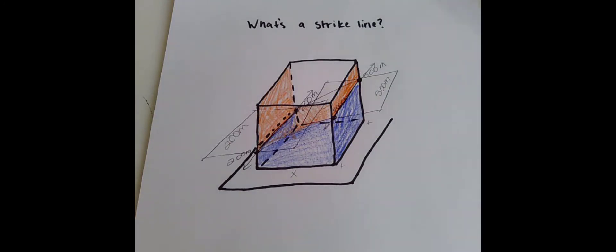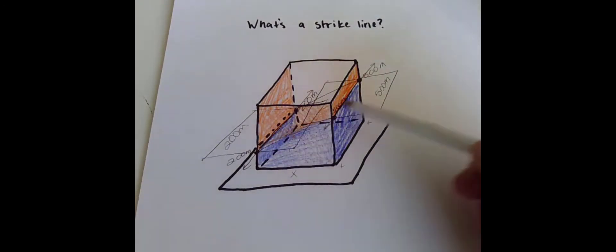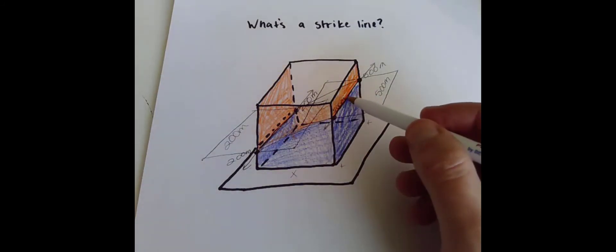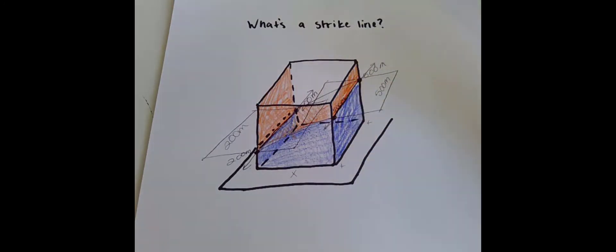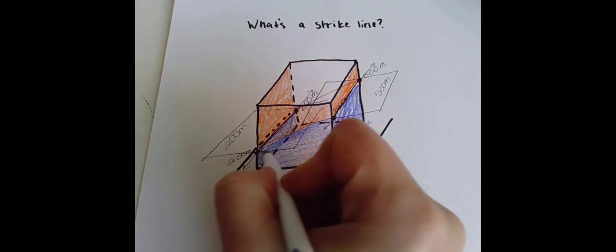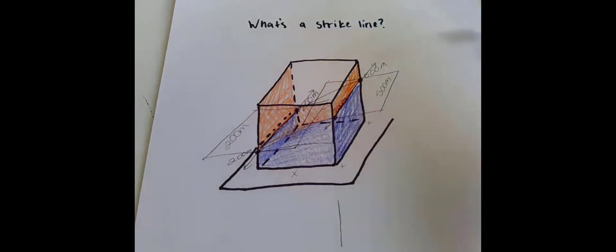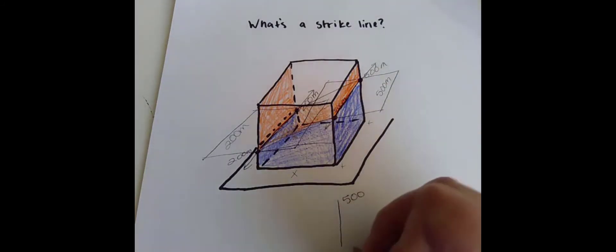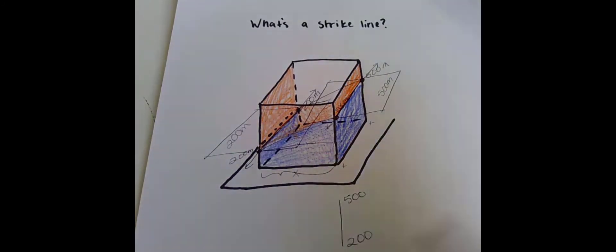And this is why strike lines are so useful for helping us find dip. Because by definition, if we've got more than one, then we have two lines in a plane and we can find the direction of dip by looking at the direction perpendicular to that line. That's the direction of dip. And we can find the amount of dip by looking at the horizontal distance between those two lines and the vertical distance between those two lines.